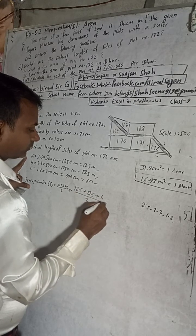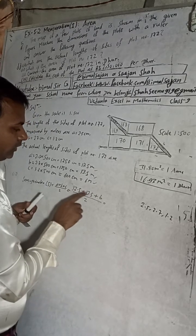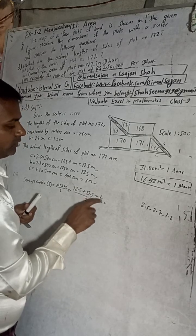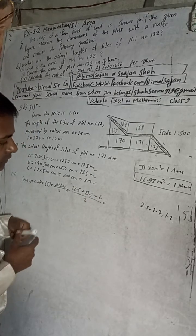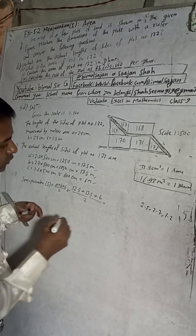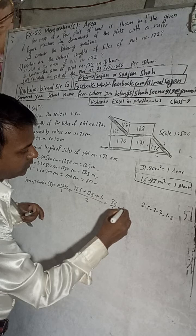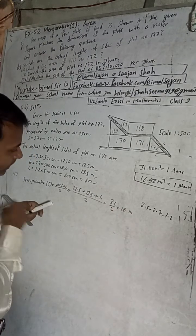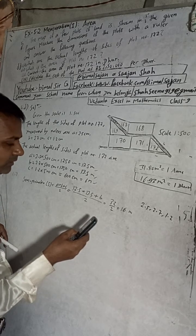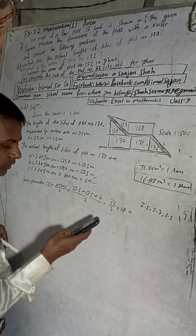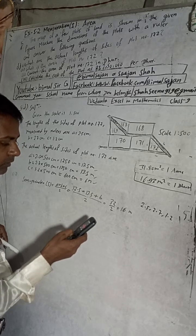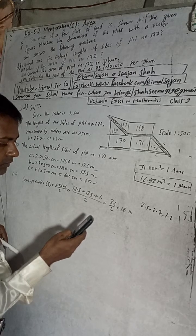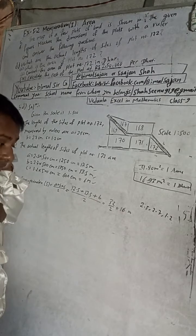By these two sides: 12.5 and 13.5, and 6. So 12.5 plus 13.5 plus 6 equals 32. Then S equals 32 divided by 2, which gives S equals 16 meters.